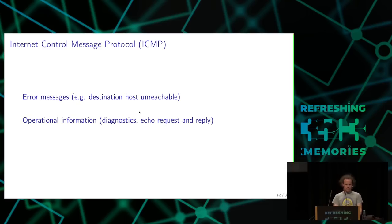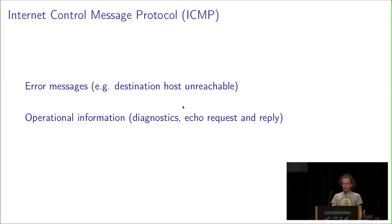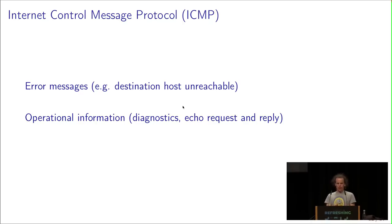ICMP is the Internet Control Message Protocol. It sits on top of IP and delivers error messages such as 'destination host unreachable' or 'time to live exceeded,' and also carries operational diagnostic information. One program you may know is Ping, which sends an ICMP echo request to a remote host. The remote host sends back the same packet with one bit flipped — an ICMP echo reply. If you can successfully ping another host, you can verify that host has IP connectivity and is online.